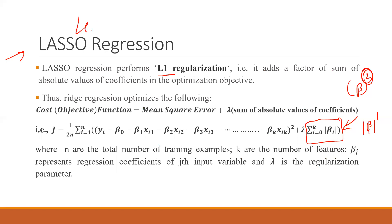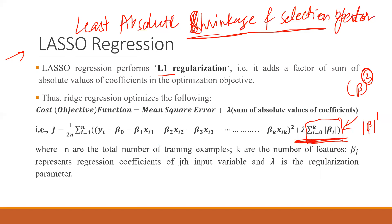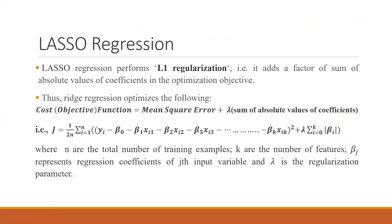Lasso's full form is Least Absolute Shrinkage and Selection Operator. Remember: shrinkage comes before selection. When we reduce overfitting using the regularization parameter, the coefficients are being shrunk because of Lambda. To minimize the cost objective function, we reduce the beta values — that is the shrinkage being done.